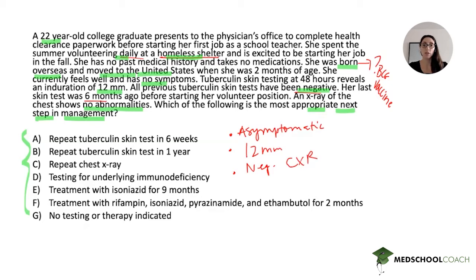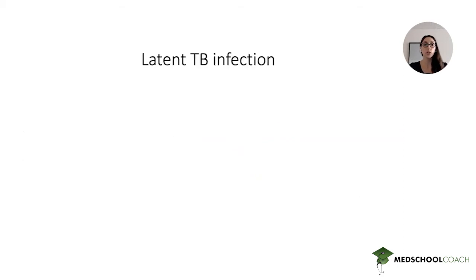To answer this question, we need to interpret the tuberculin skin test — specifically, whether the degree of induration is concerning — and then, given the absence of symptoms and the negative chest X-ray, determine what to do next. Let's review these learning points and then come back to answer the question.